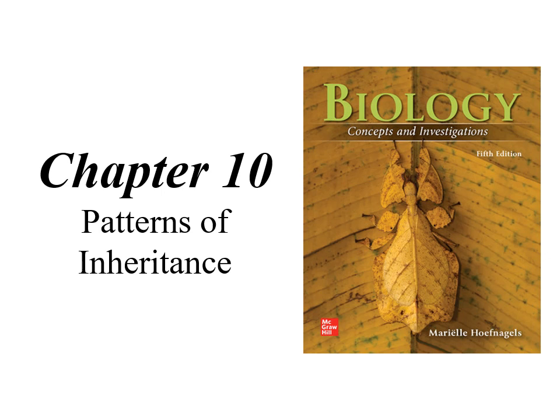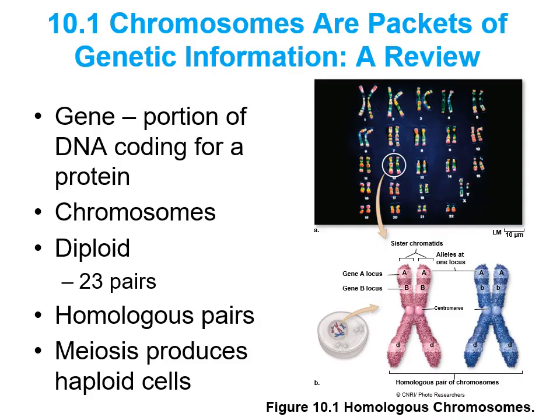Welcome back, everyone. This is going to be our lecture on Chapter 10, which is entitled Patterns of Inheritance. Now that we have perused certain chapters, hopefully we have all become familiar with not only the concept of DNA being our genetic code, but the fact that our DNA is represented in our 46 chromosomes or our 23 pairs as diploid organisms.